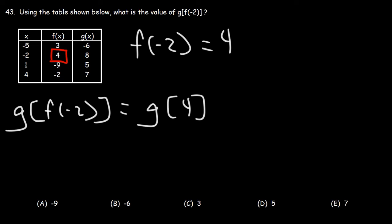Now what is g(4)? So using the last column and the row where x is 4, we see that g(4) is 7. So this is the final answer for this problem. Answer choice E is the correct answer.